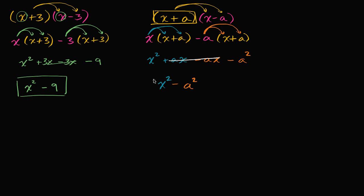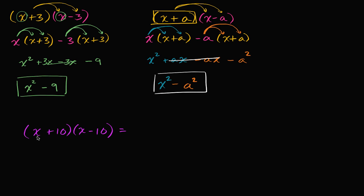You can view this as a special case: when you have x plus something times x minus that same something, it's going to be x squared minus that something squared. This is a good one to know in general, and we can use it to quickly figure out products of other binomials that fit this pattern. So if I were to ask, what is x plus 10 times x minus 10? It fits the pattern — x plus a times x minus a — so it's x squared minus a squared. If a is 10, then a squared is 100, and you get x squared minus 100. You can do it really quickly once you recognize the pattern.